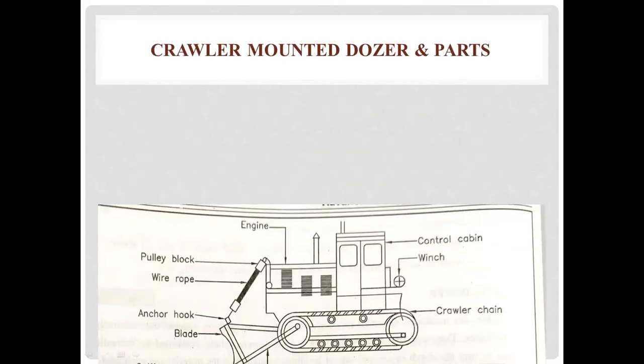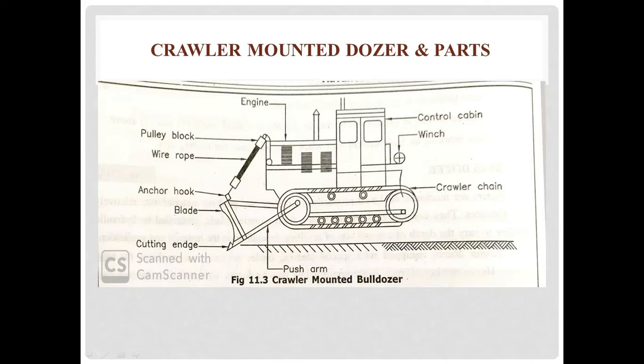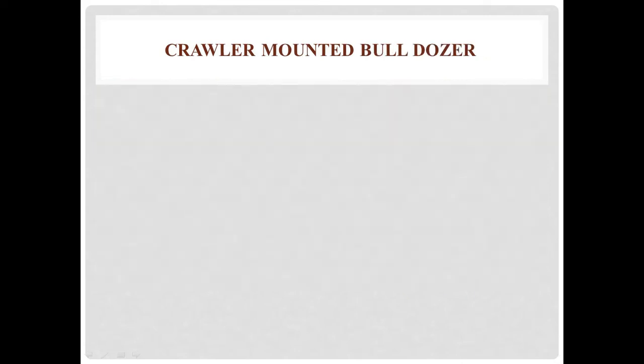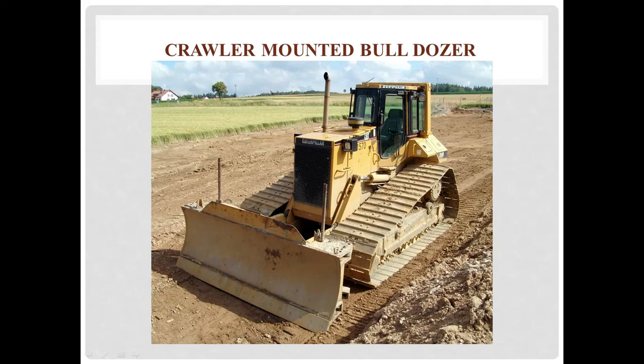Looking at the parts and line diagram of a crawler mounted bulldozer: at the front part is the engine. Then there is a pulley block and wire rope through which, with the help of an anchor hook, the blade is attached. The blade has a cutting edge at its bottom and is attached to the crawler with the help of a pusher arm. This is the real image of the crawler mounted bulldozer.